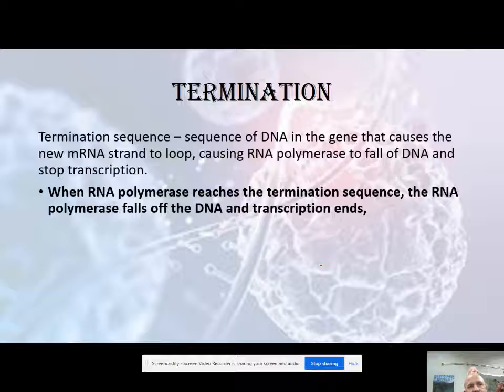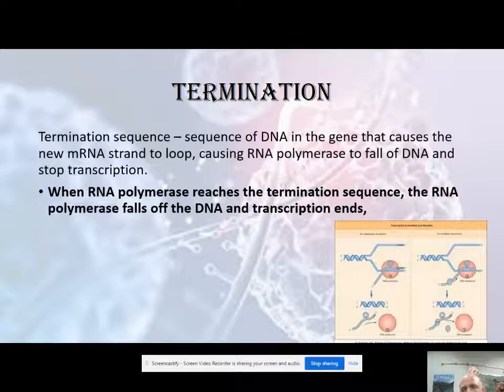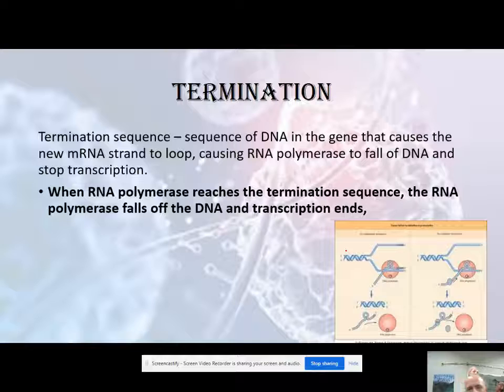The final section is termination. There's going to be a termination sequence of DNA in the gene that causes the new mRNA strand to loop up. When this RNA strand loops up, it causes RNA polymerase to basically just fall off the DNA and stop transcription. RNA polymerase is making the strand, hits a sequence that gets transcribed, and in that sequence it causes the RNA to make a little loop right there, which jostles the RNA polymerase off. It then goes back to start transcription again as soon as it finds the right promoter region.